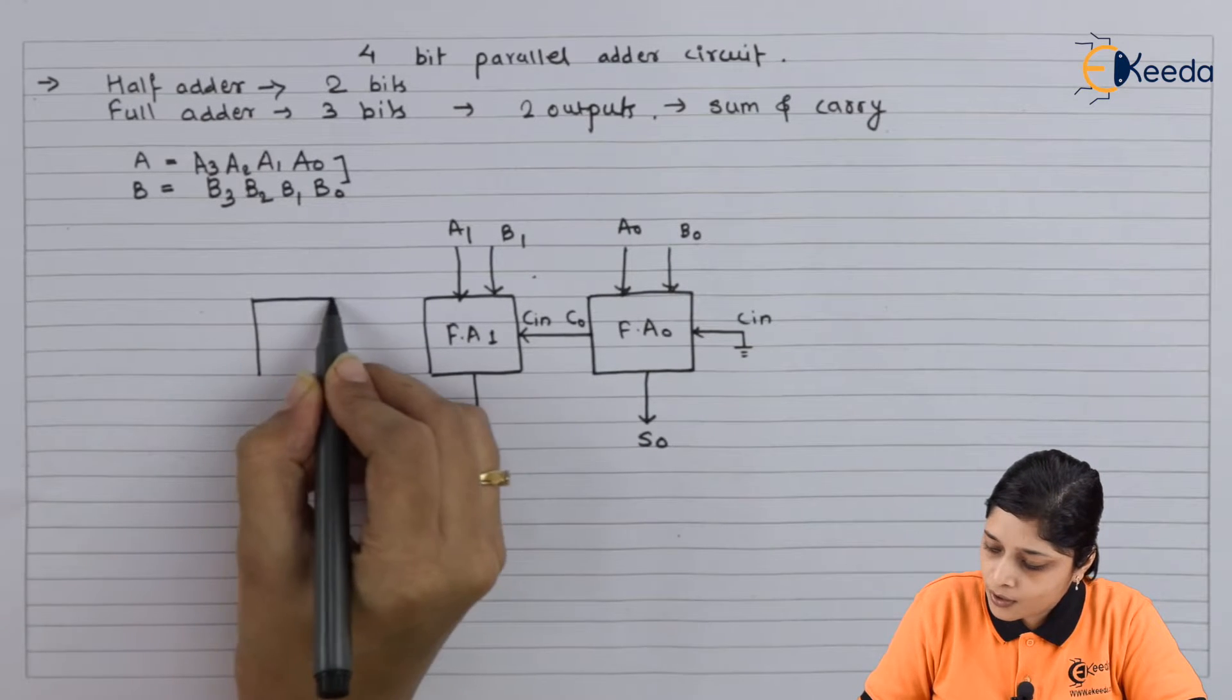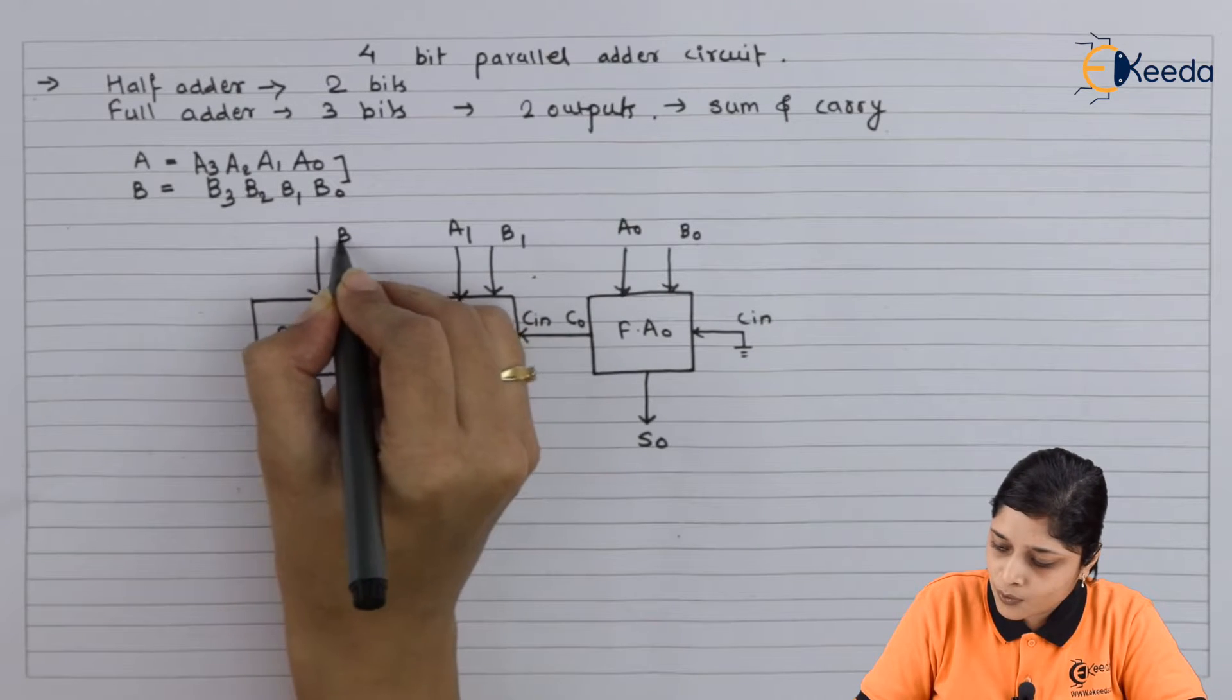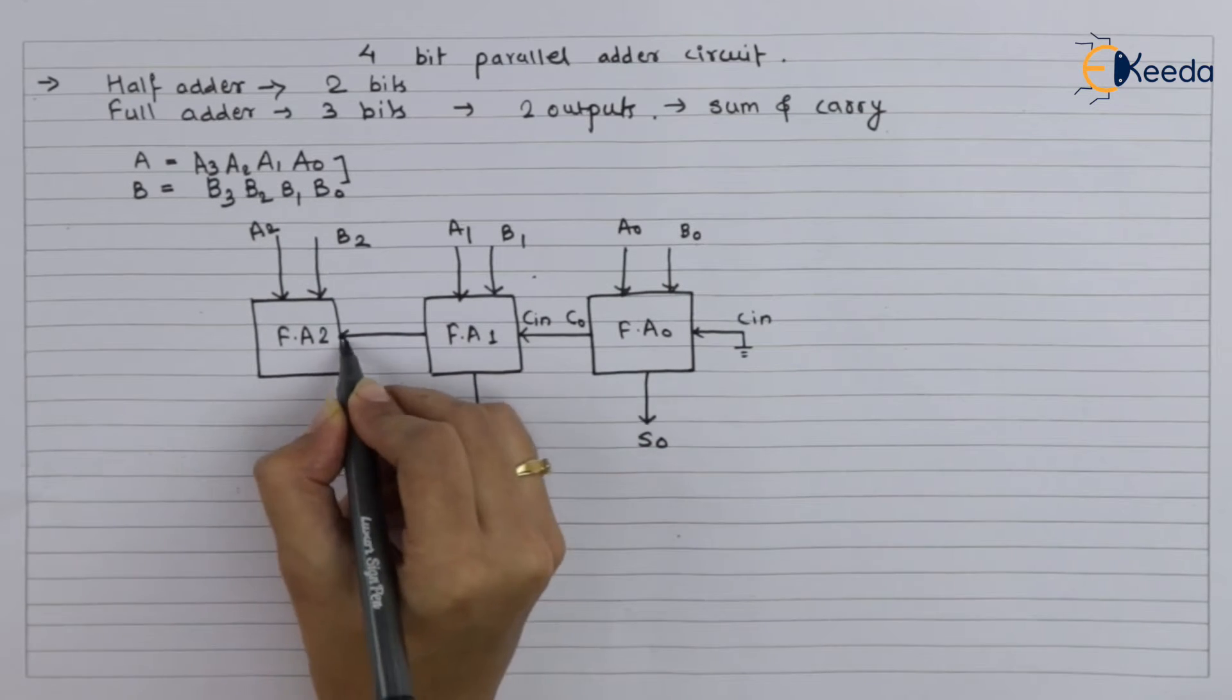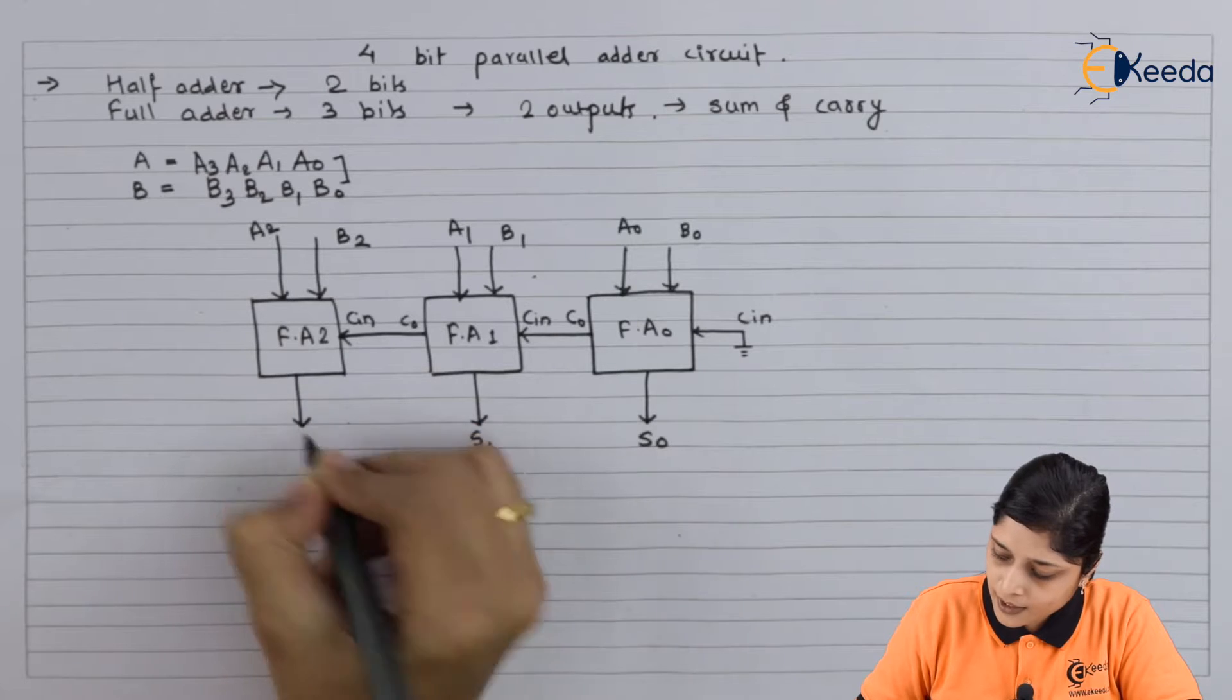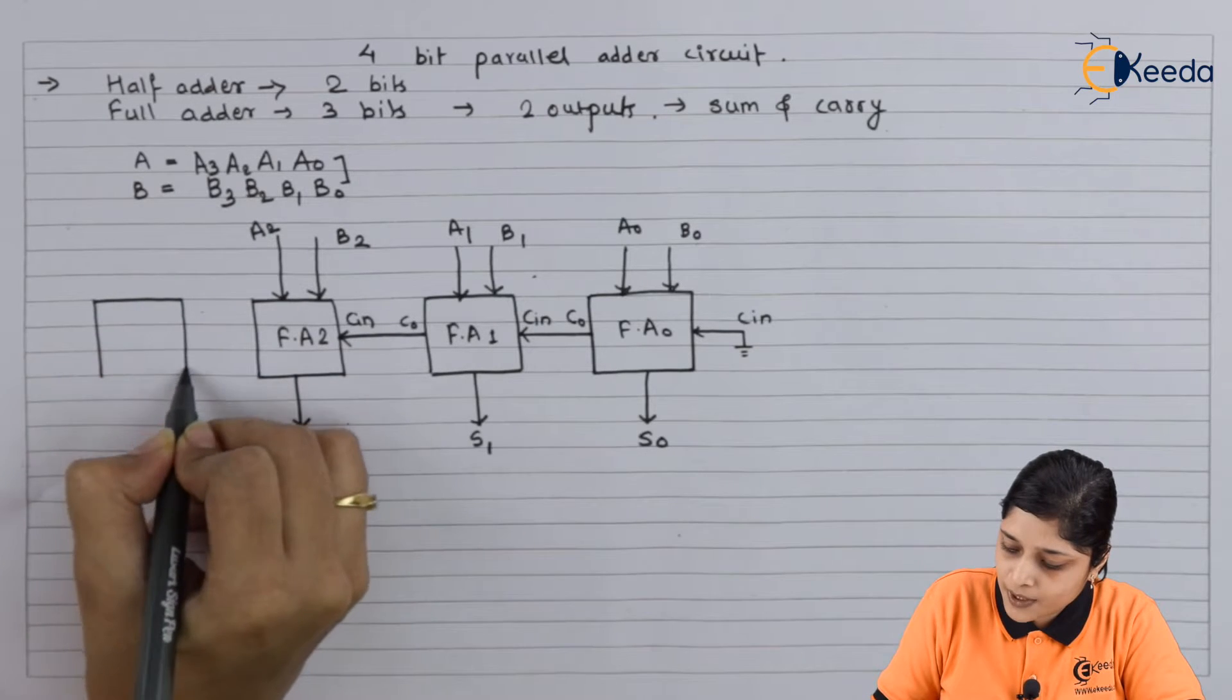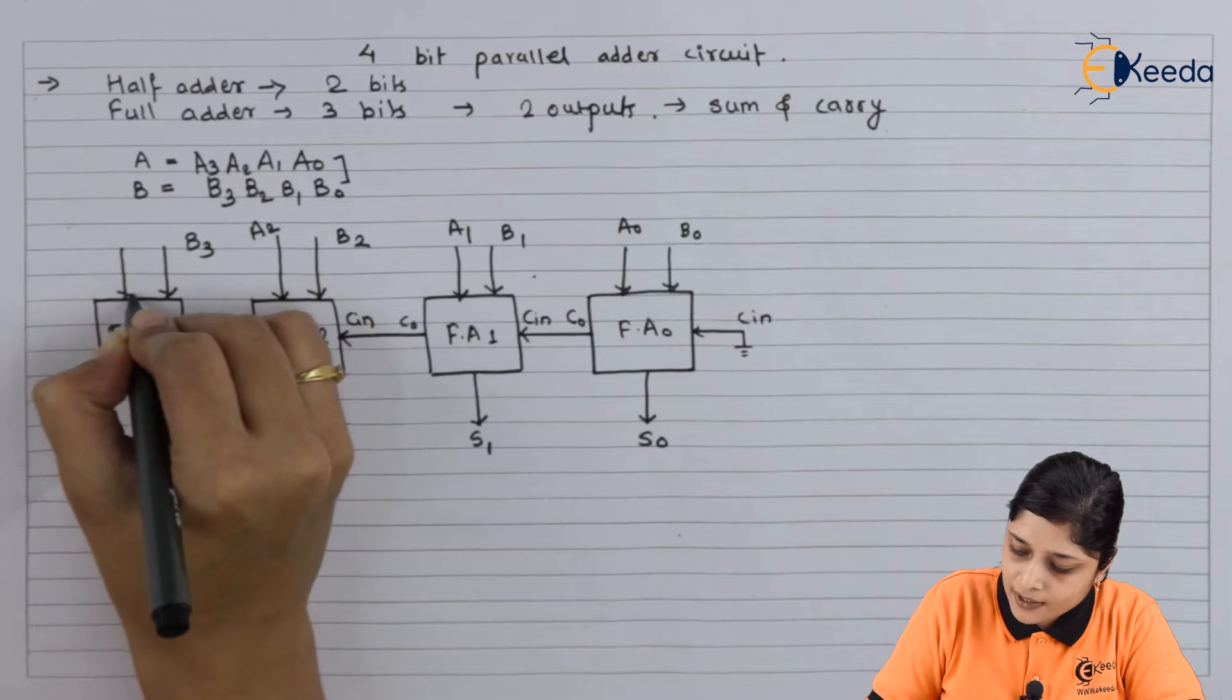Again, for addition purpose we can draw here full adder 2 for addition of B2 and A2. Now again output here we are going to take for next full adder. Here we are getting sum as S2. Now for addition of last two bits we are taking full adder 3 for addition of B3 and A3.